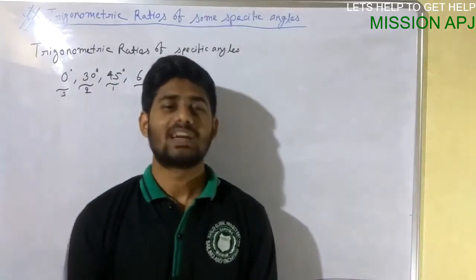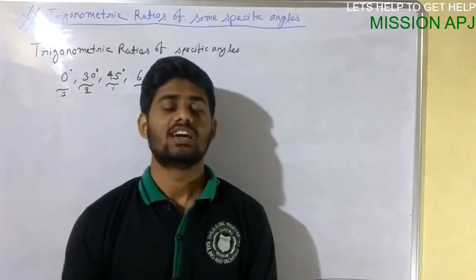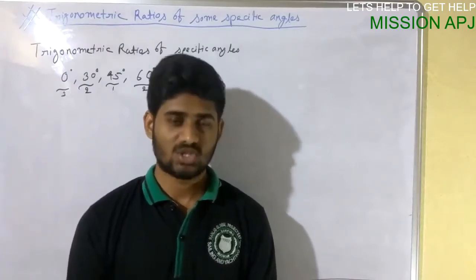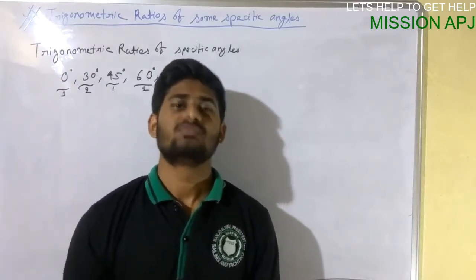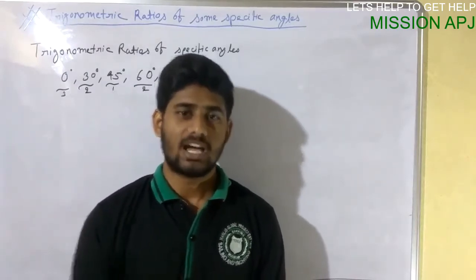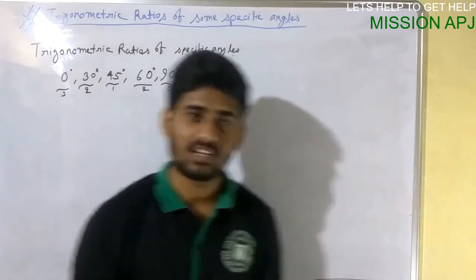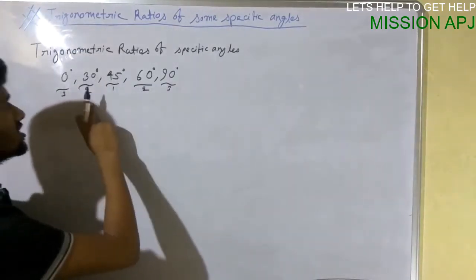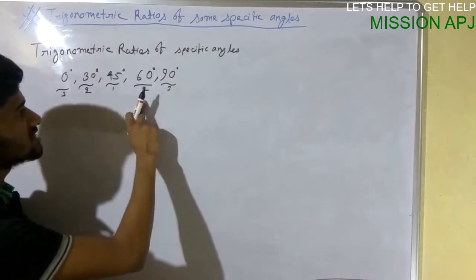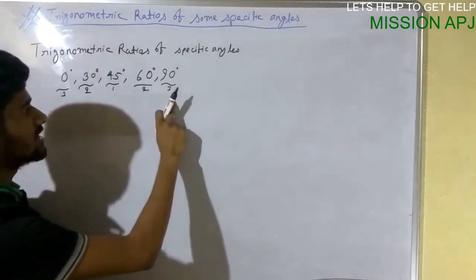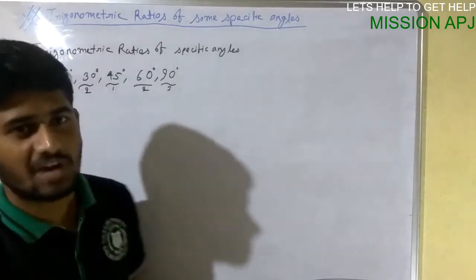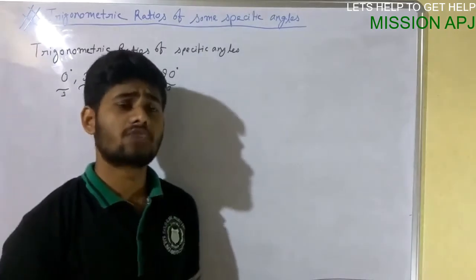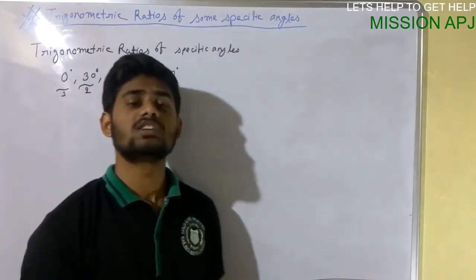Hello friends, my name is Javed Akhtar and today we are going to learn trigonometrical ratios of some specific angles. The specific angles for us are 0°, 30°, 45°, 60°, and 90°. So what we are going to find out here is the trigonometrical ratios for each of these angles.